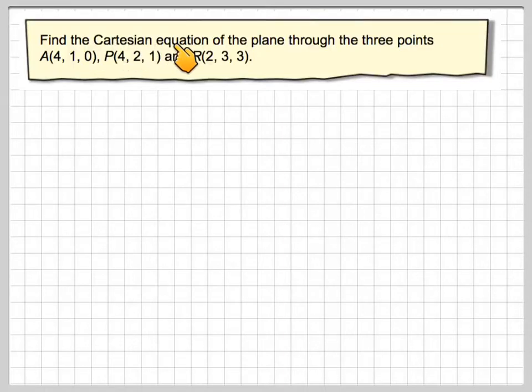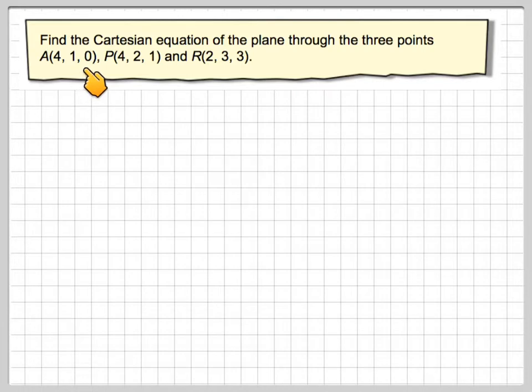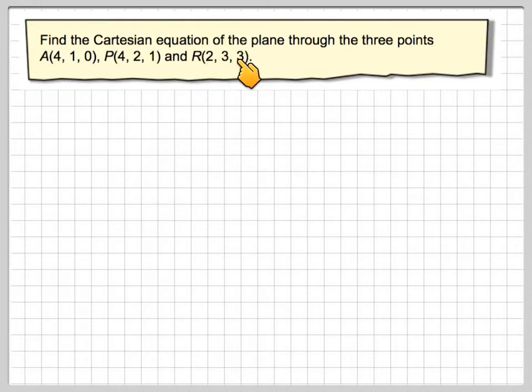Find the Cartesian equation of the plane through the three points A(4, 1, 0), P(4, 2, 1), and R(2, 3, 3).